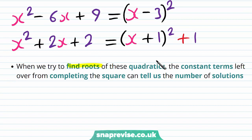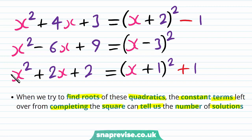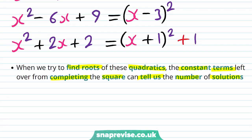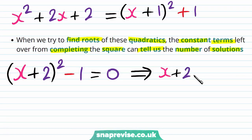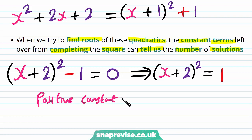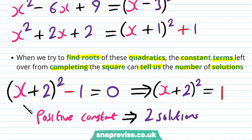When we try to find the roots of these quadratics, the constant terms left over from completing the square can tell us the number of solutions. If we set the right-hand side completed square form equal to zero, for our first equation we have x plus 2 all squared minus 1 equals zero. Rearranging gives x plus 2 squared equals 1. This value is a positive constant — plus 1 on the right-hand side — and so by square rooting we're going to have two solutions.